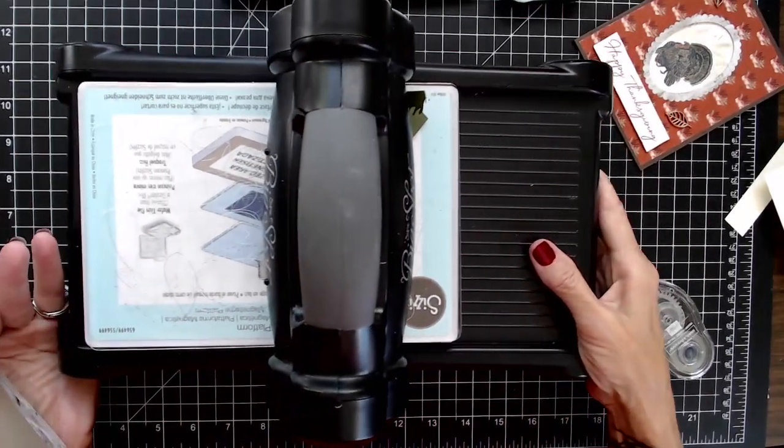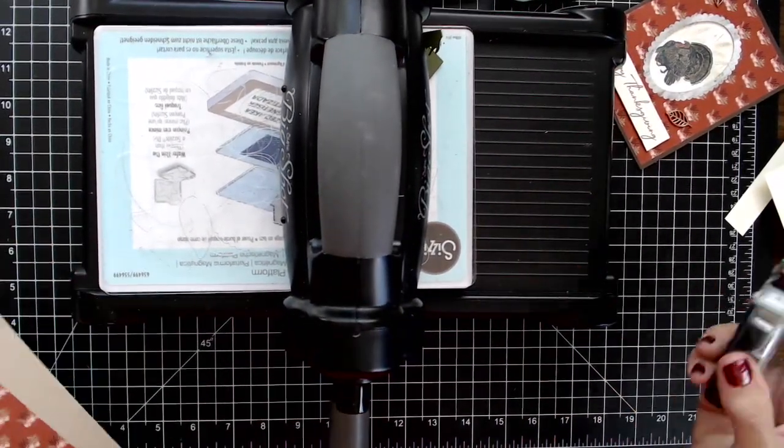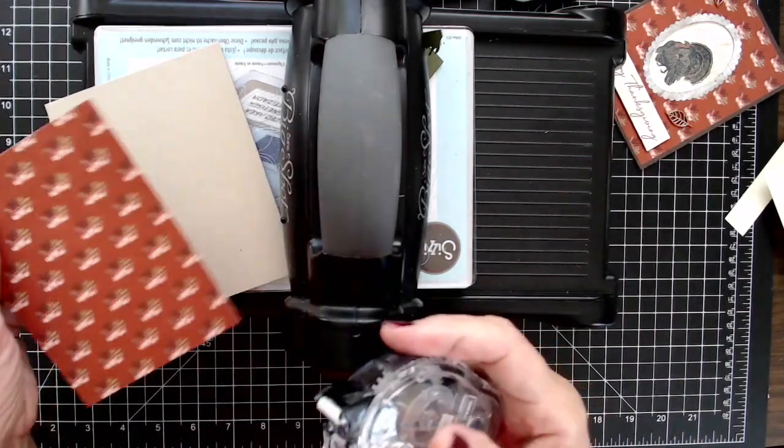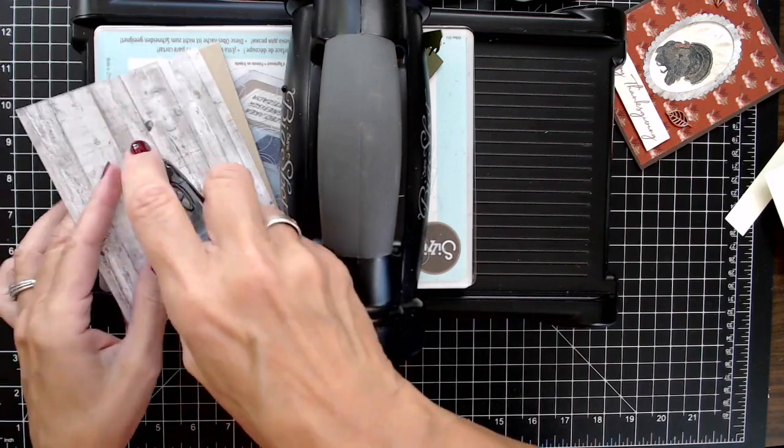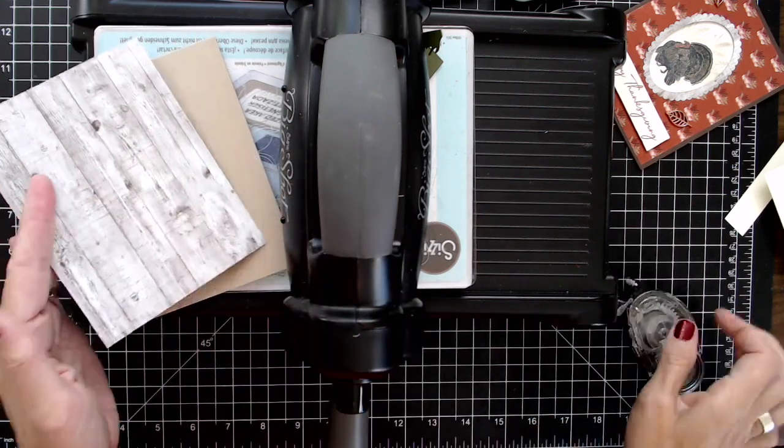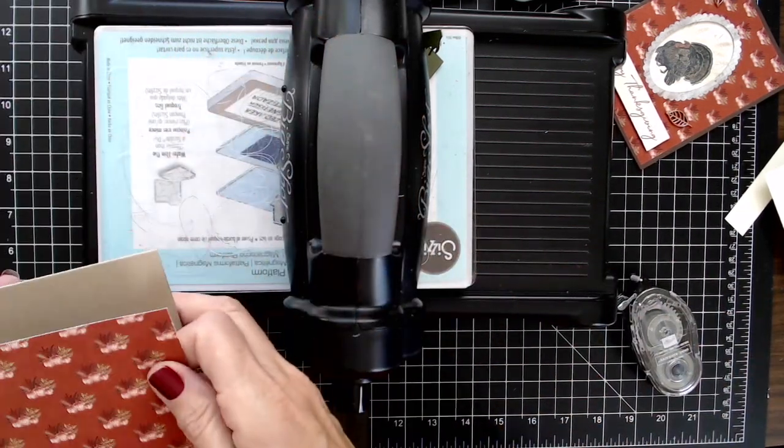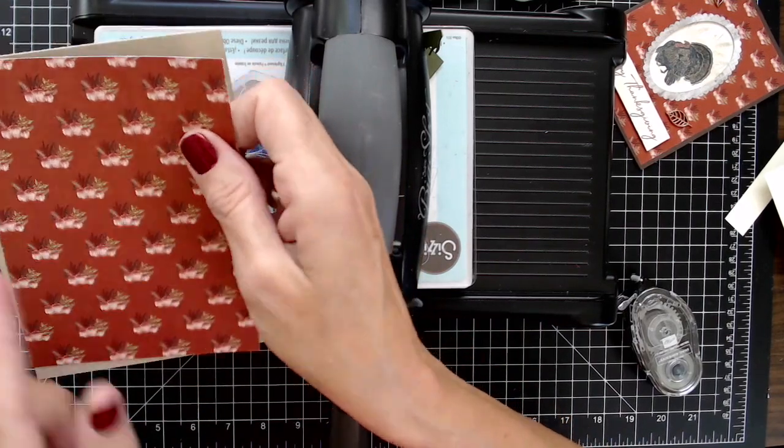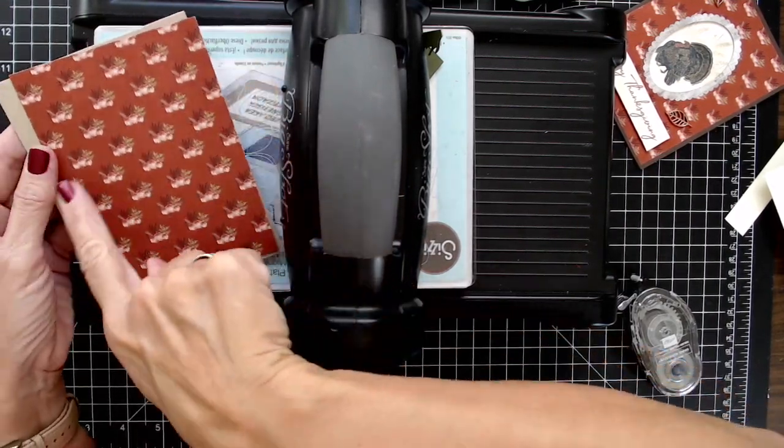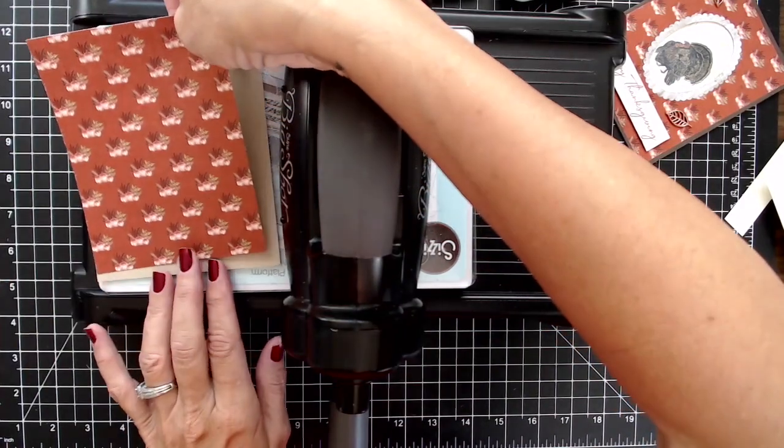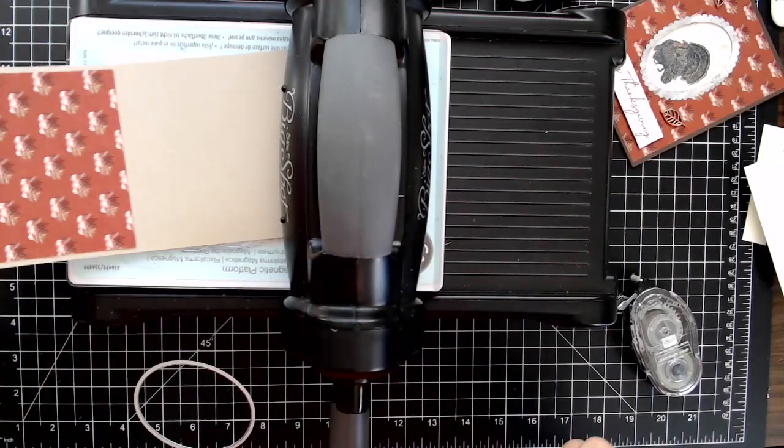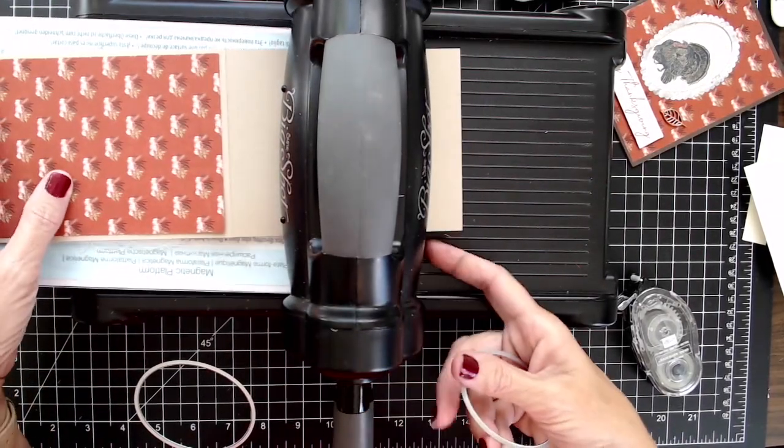Okay, so I brought my Big Shot in and what I'm going to do, because I'm going to cut both pieces out at the same time, I'm going to put a little bit of Snail right here on the back of my designer series paper. And there's a pattern here, so you want to make sure that your pattern is going in the right direction. Okay, so then you just put it in place where you want your paper to be. So then you just place it in like this.